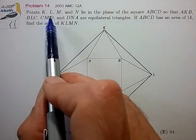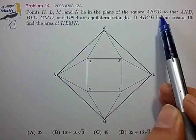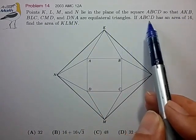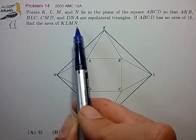We have points KLMN lying in the plane of square ABCD so that the four triangles are all equilateral triangles and if square ABCD has area 16, find the area of KLMN.